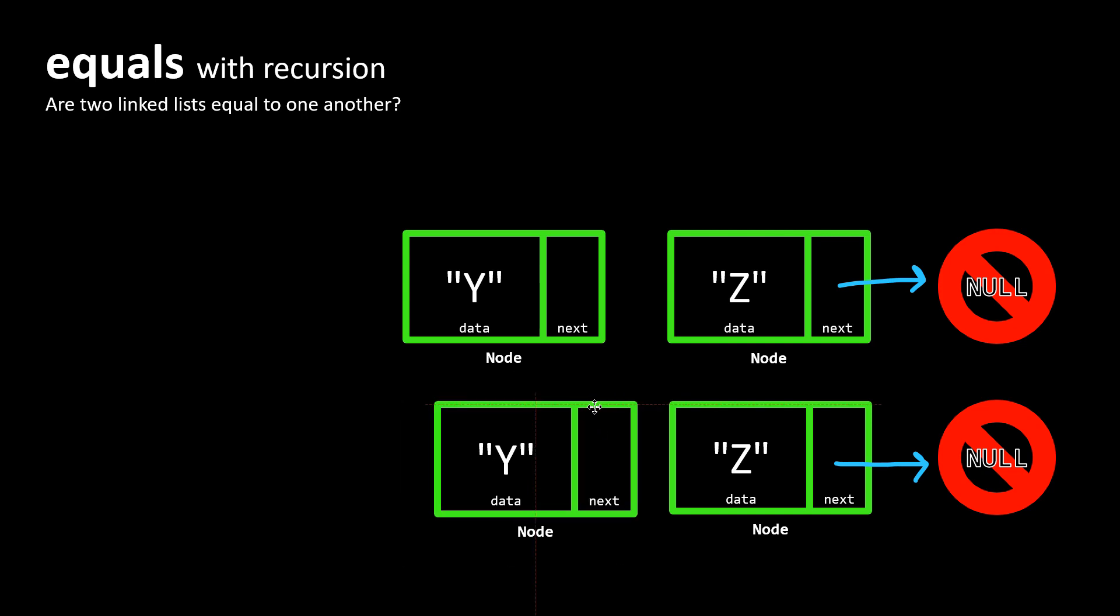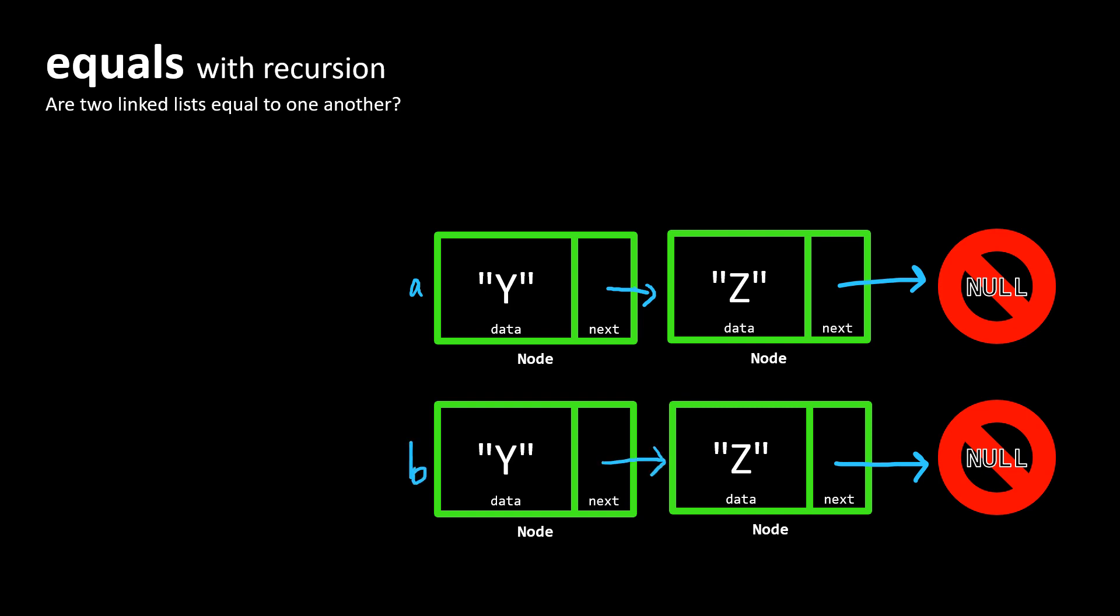And let me just buy myself a little space. And what we'll say here is that for our A list, Y is connected to Z and Y is connected to Z. And for our B list, the same is true. So we can look at this and infer that indeed these two lists are equal.